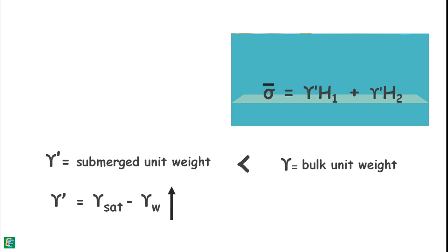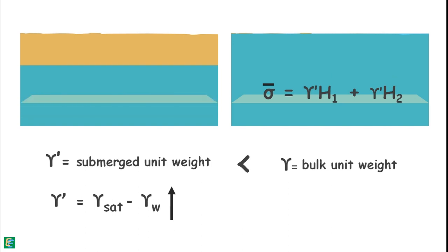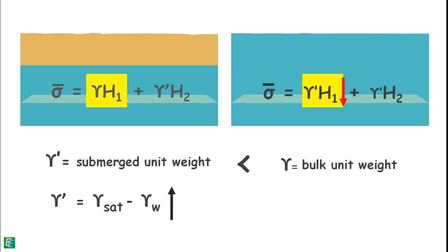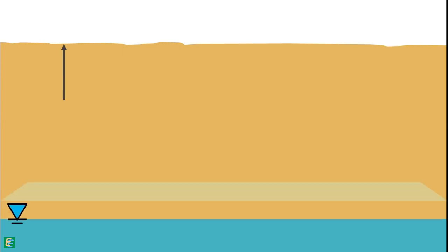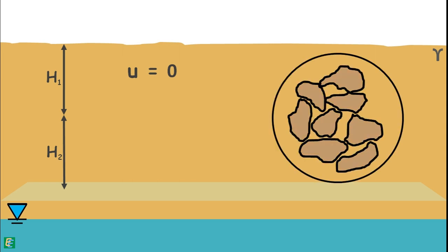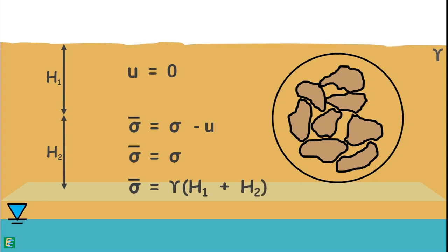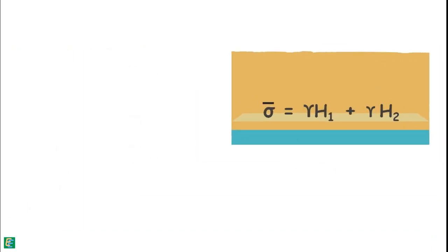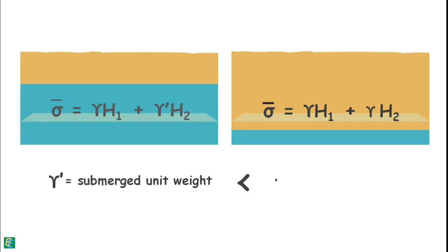Comparing this result with our initial situation, we can note that because of the rise in the water table, the effective stress on the particles at a particular depth decreases. In another case, if the water table falls below our observation plane, then pore water pressure becomes zero as no water is present in the voids to apply pressure. Total stress will equal the effective stress, which is the bulk unit weight of the soil multiplied by the height of the soil mass. Comparing with the initial situation, because of the water drawdown, the effective stress has increased.